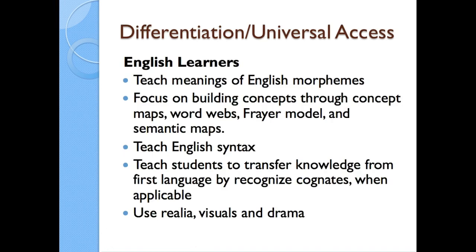For English language learners, be even more explicit: teach the meaning of English morphemes, build concepts through concept maps, word webs, the Frayer model, and semantic maps. Teach English syntax and expected word order. Teach students to transfer knowledge from their first language by recognizing cognates whenever applicable. Use realia, visuals, and drama, and have students interact with each other — the more students practice language, the more it settles into their vocabulary and understanding. Putting them in groups, having them talk to each other, and working with different people is really beneficial.